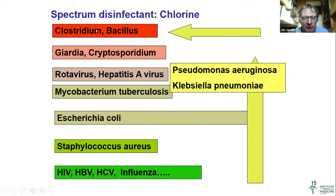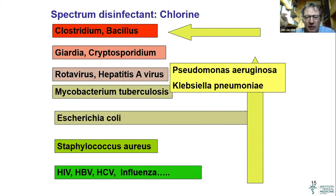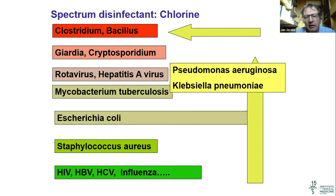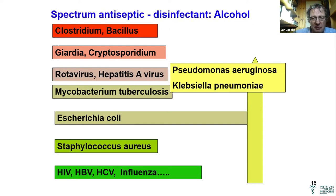This arrow points to Clostridium and Bacillus. Remember that neonatal tetanus — these spores can survive non-optimal sterilization.